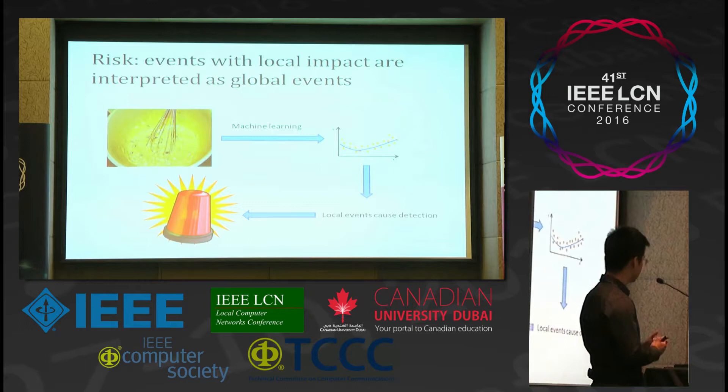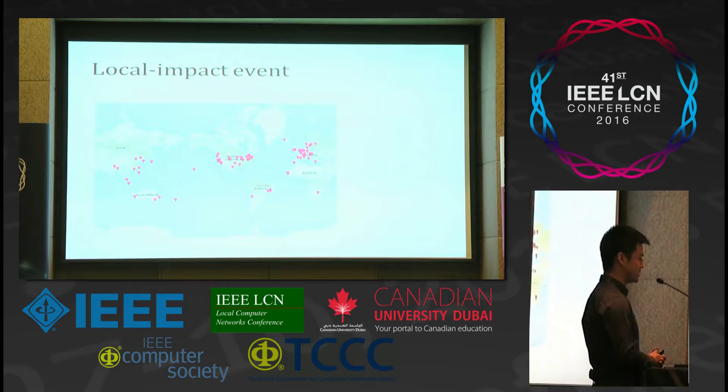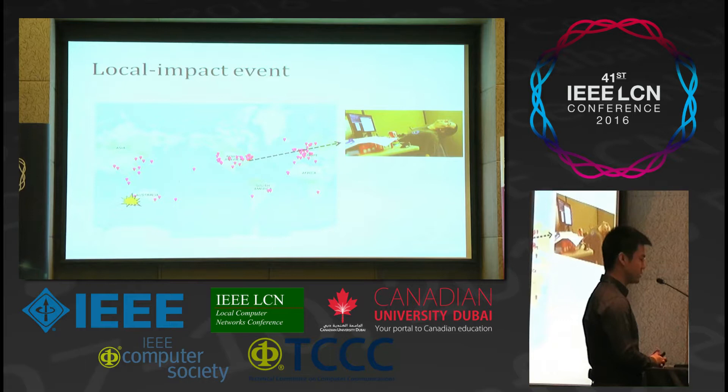We can see some local impact events on the internet. For example, an event happened in Australia, and its impact is quite localized. The network operator in the US does not have to worry about this event, because the impact does not reach that far.